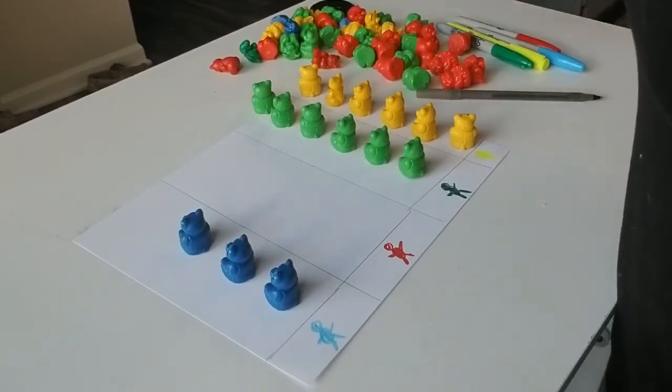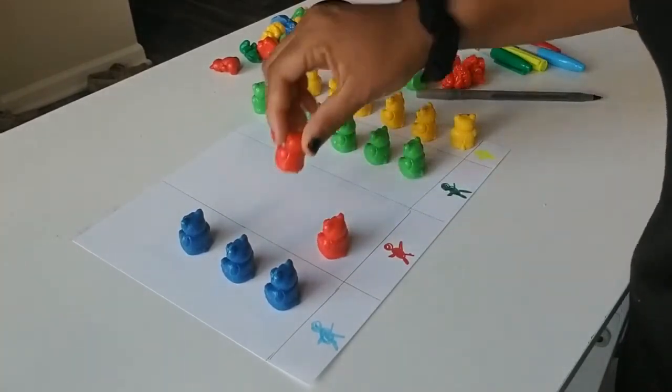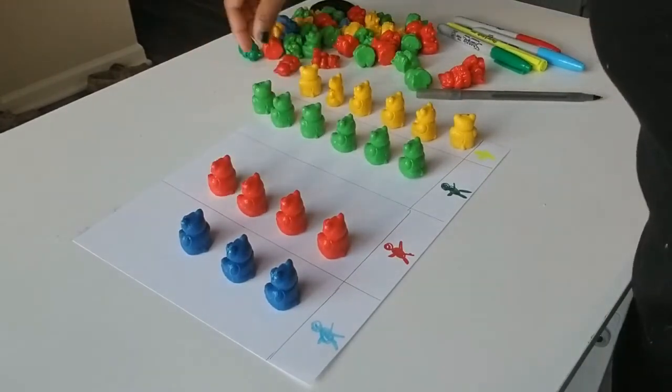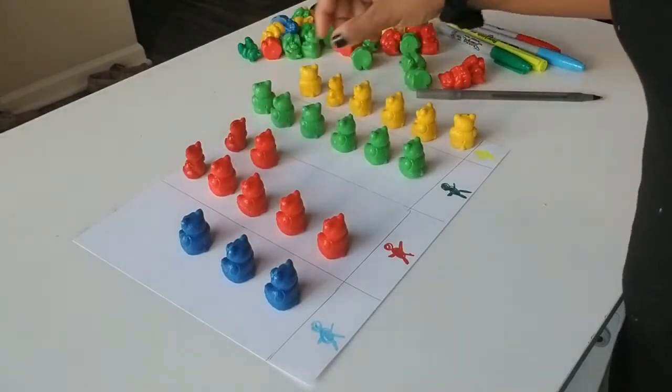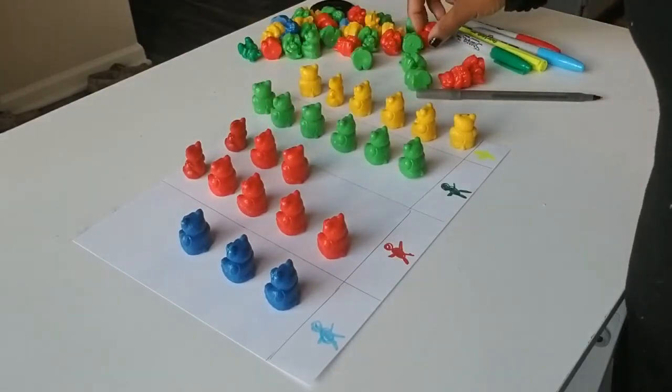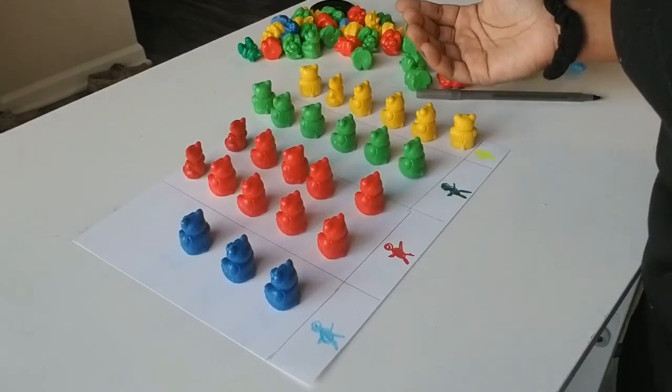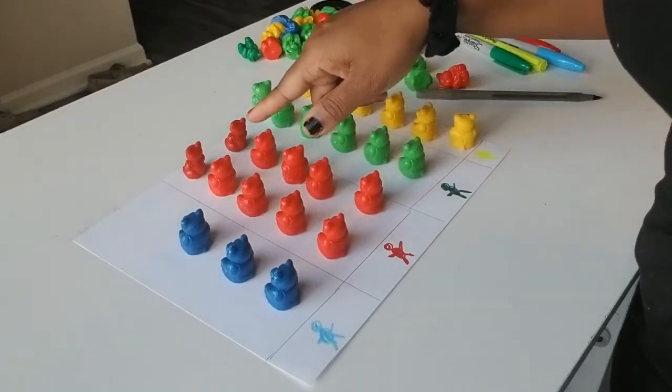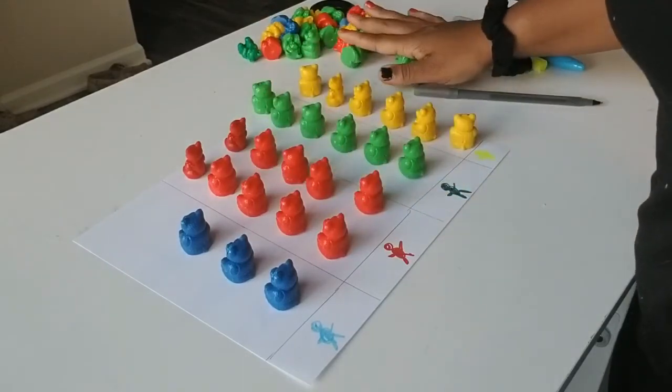And you can say, hey, can you find me ten red bears? Can you put them in the red bear column? One, two, three, four, five, six, seven, eight, nine, ten. And then have the child, once again, repeat back, counting all the bears to make sure they're correct. One, two, three, four, five, six, seven, eight, nine, ten.